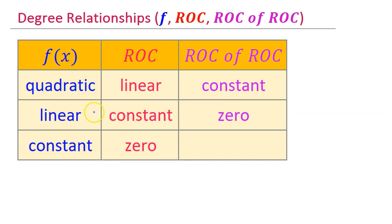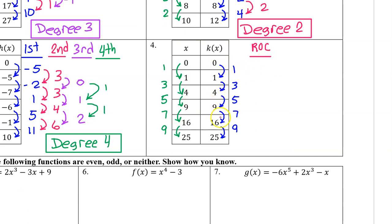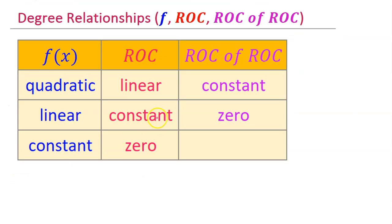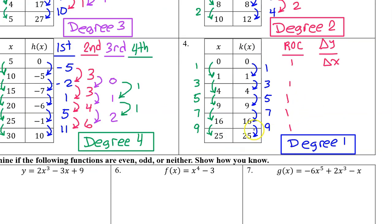Let's see if it turns out to be one of these. To calculate the rate of change for each interval, we need the output value differences. The rate of change is the change in y divided by the change in x — the change in output divided by the change in input. For this first interval, the rate of change is 1 over 1, which is 1. For the next intervals: 3 over 3, 5 over 5, 7 over 7, and 9 over 9. The rate of change is constant, so the function is linear — k of x is degree 1.